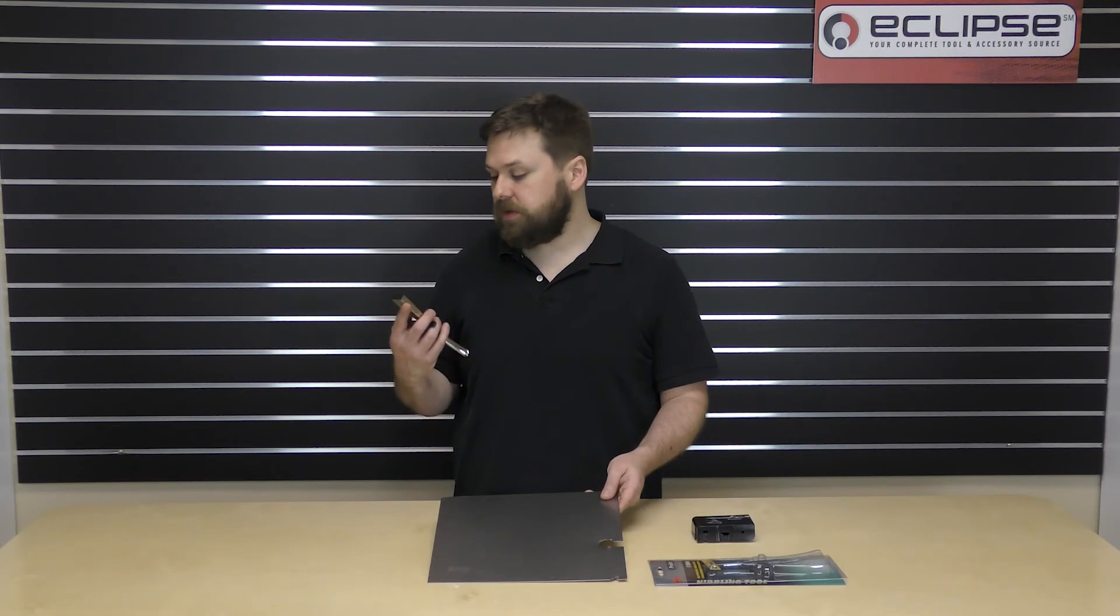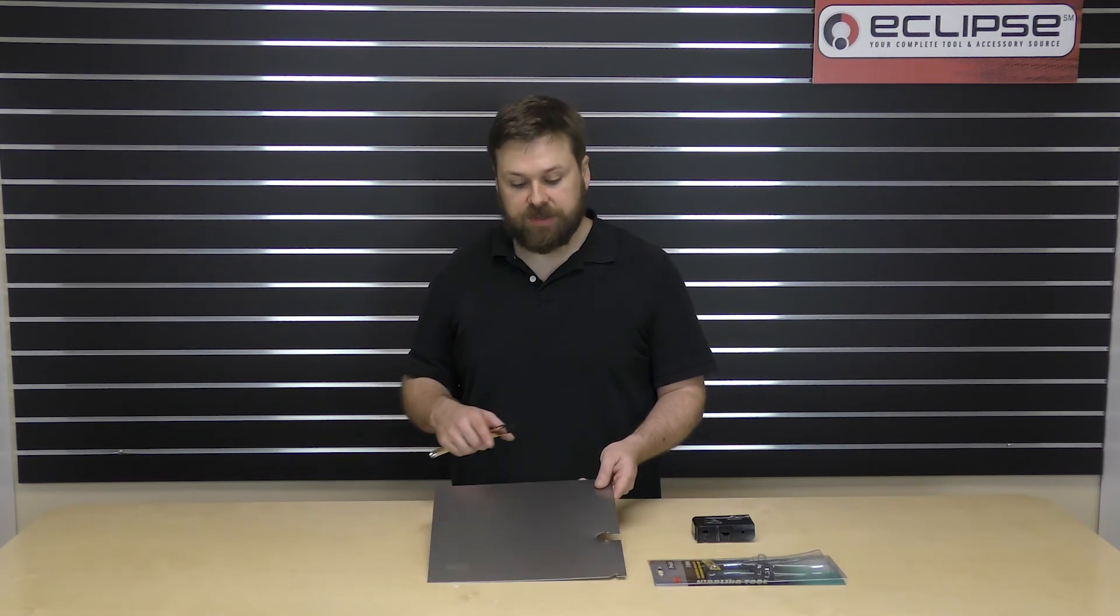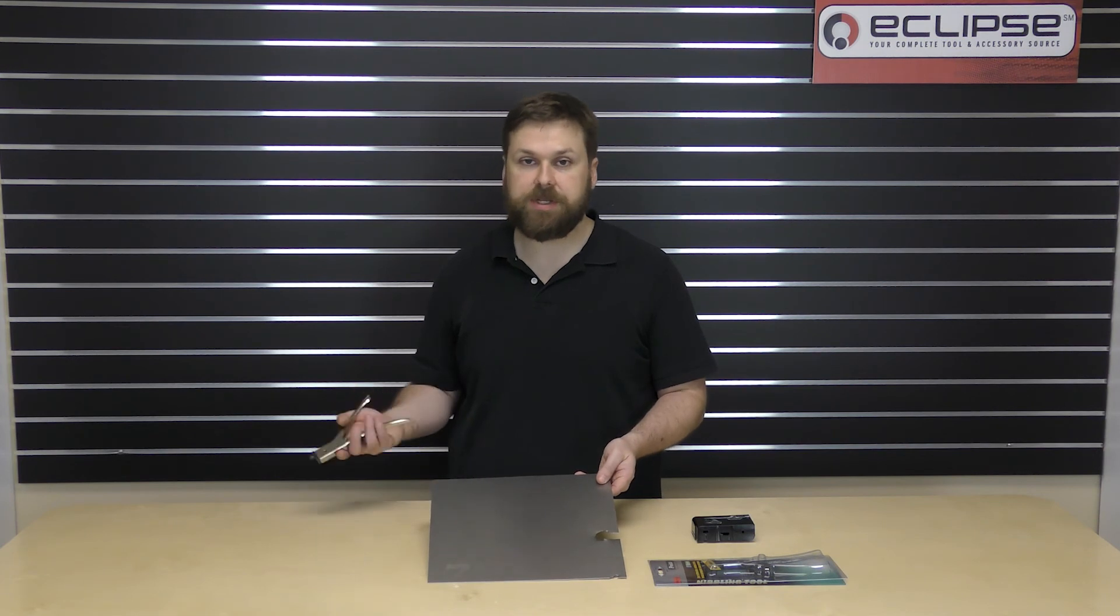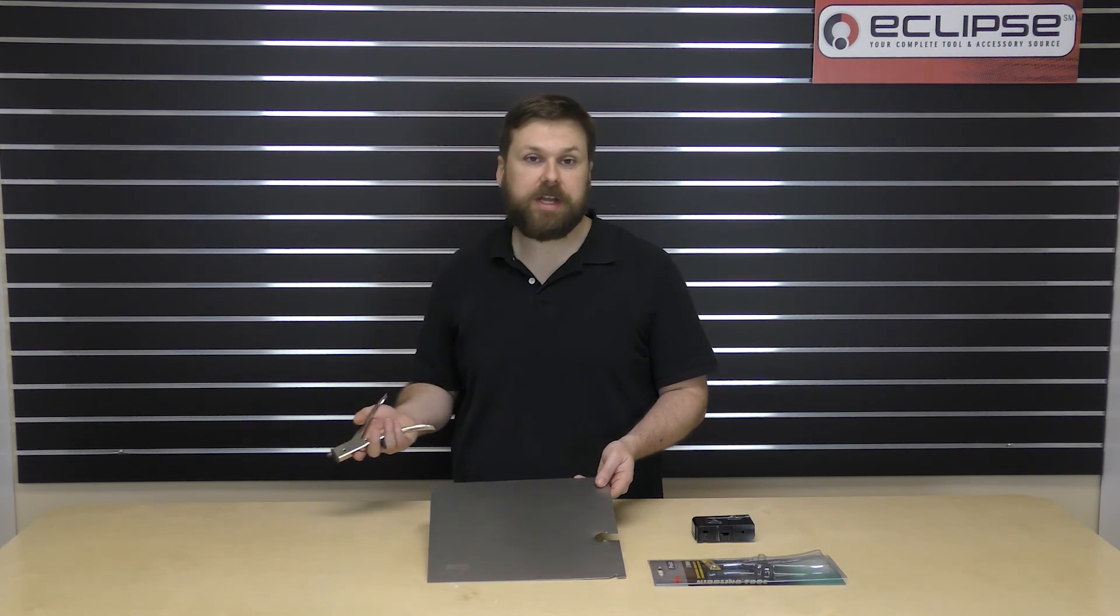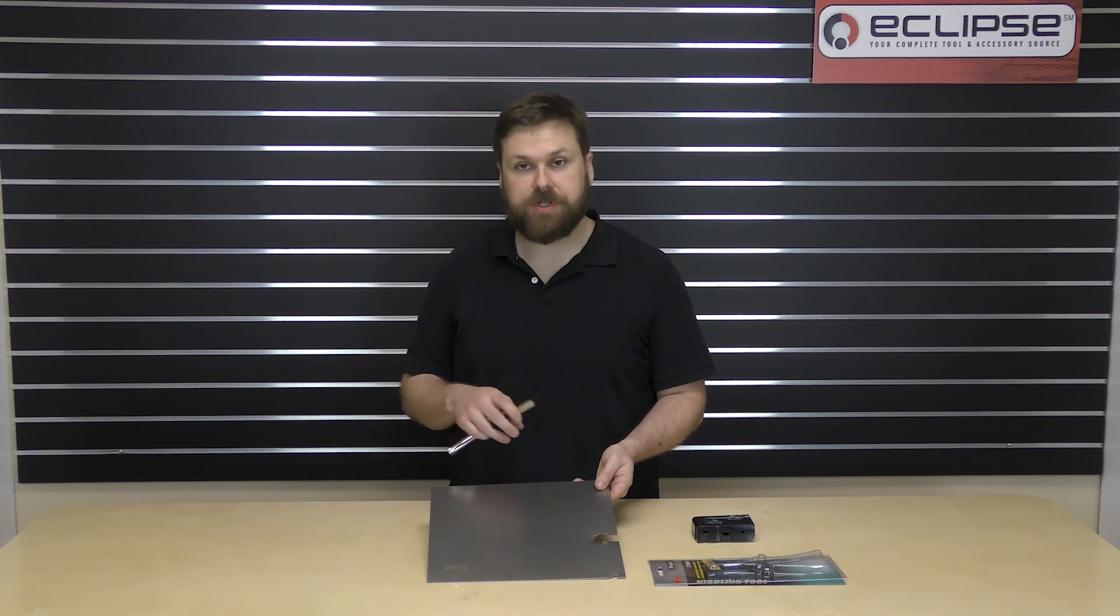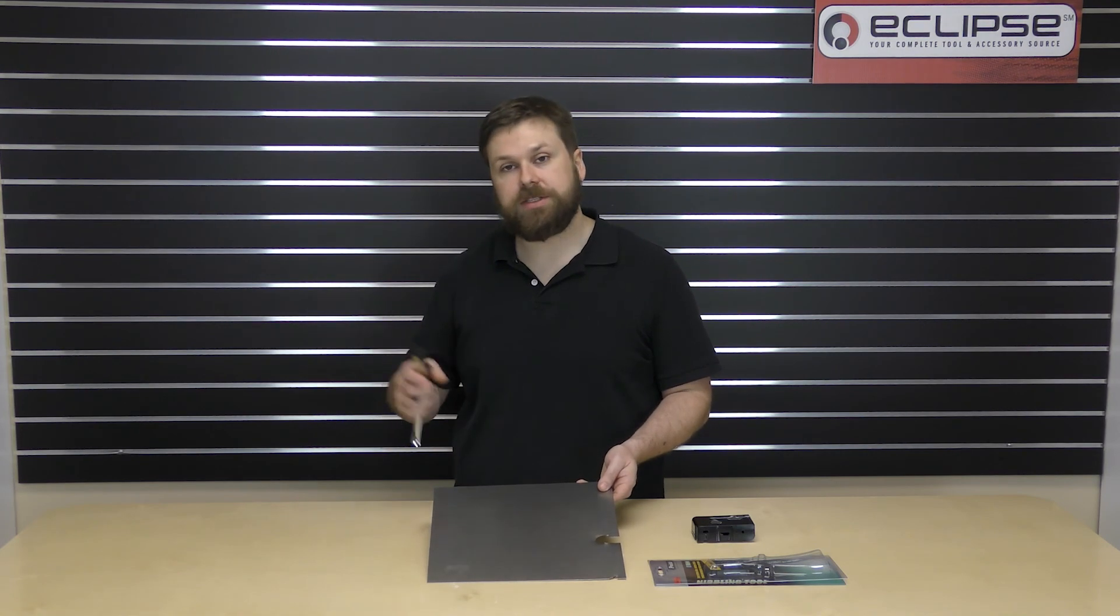So that's our quick look at using the nibbling tool. As you can see, it does take some force to cut through these steel sheets, but it is capable of getting the job done. If you had a battery-powered cutter, it's going to be faster and more efficient, but this is way less expensive and just something you can easily keep inside of your tool kit. Plastic cuts through like butter; copper and aluminum would be much easier as well. Thanks for watching.